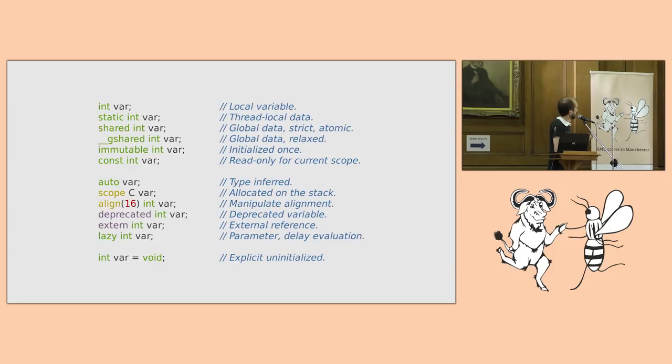I can skip over these. They are sort of as C really. Lazy parameters, they are lowered to a delegate. And all variables get a default initializer. If you want to explicitly leave a variable uninitialized, then you must provide equals void.